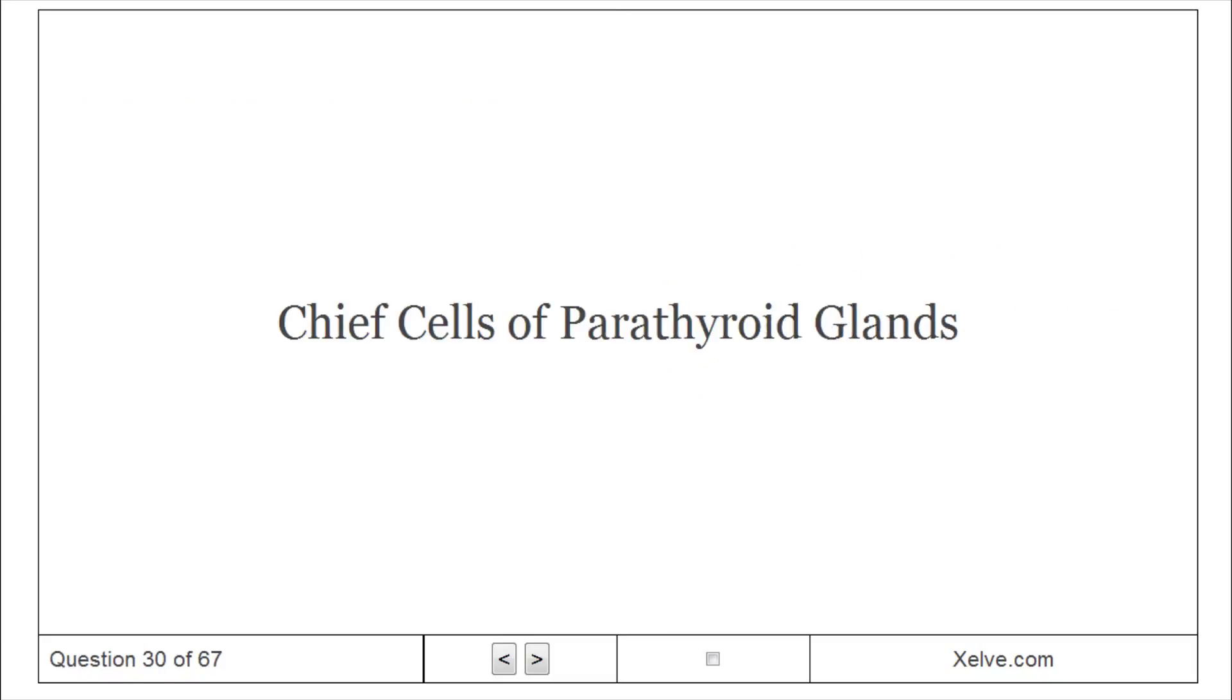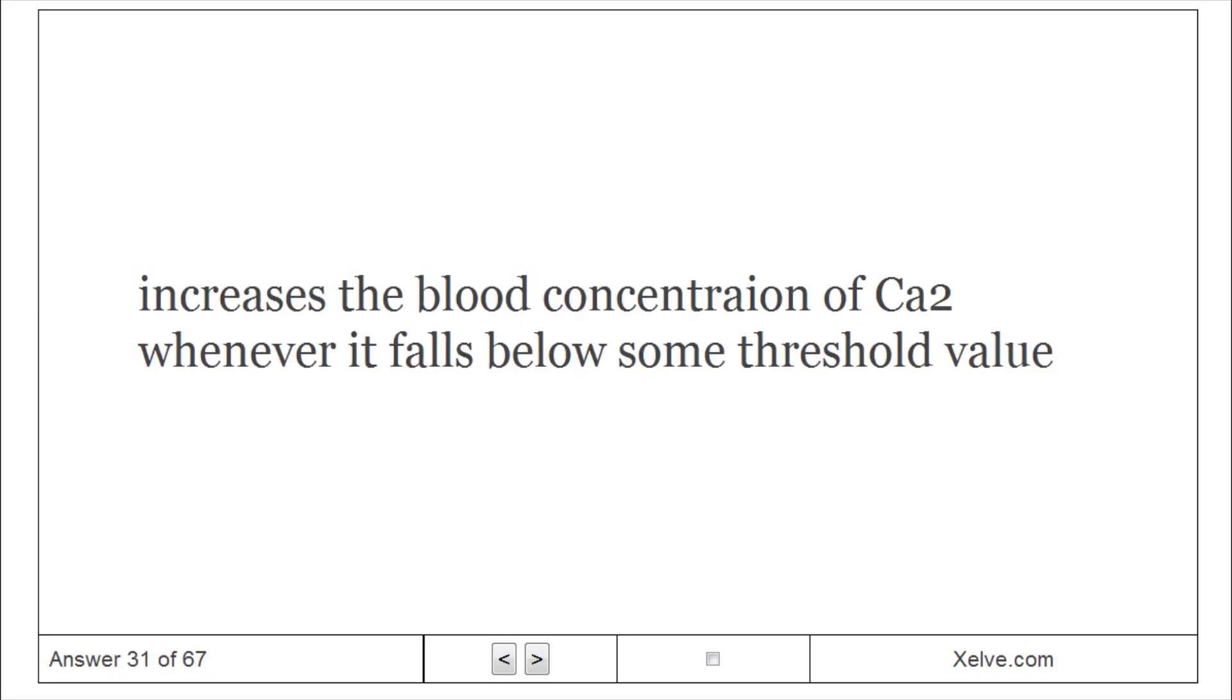Chief cells of parathyroid glands produce parathyroid hormone, PTH. PTH increases the blood concentration of calcium whenever it falls below some threshold value.